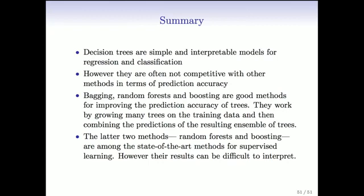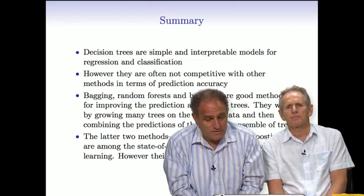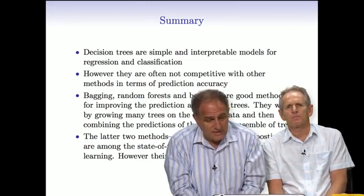To summarize: we've talked about decision trees and using ensembles of trees. On the plus side, they're simple and interpretable when small, but as we've seen in examples, they're often not very competitive in terms of prediction error. Newer methods — bagging, random forest, and boosting — use trees in combination as an ensemble, and in the process they can improve prediction error quite considerably. The result is that random forest and boosting are really among the state-of-the-art techniques for supervised learning. If you're interested in prediction performance, they're very good techniques, though for interpretation they're more challenging.